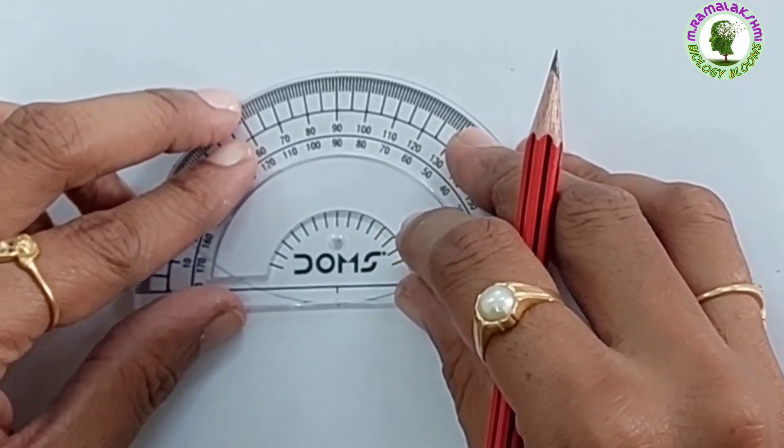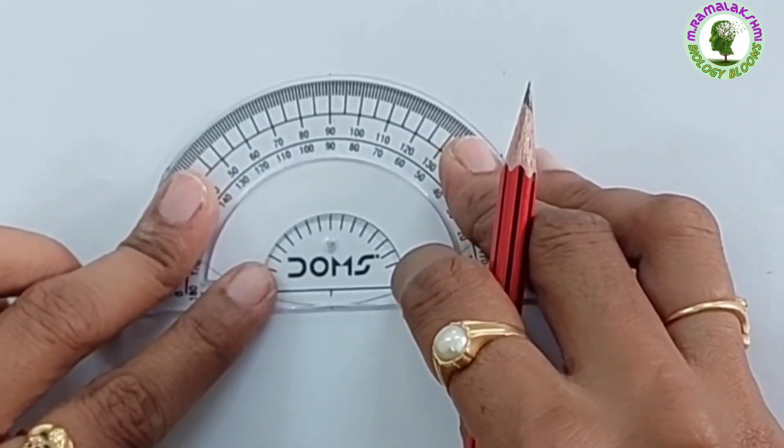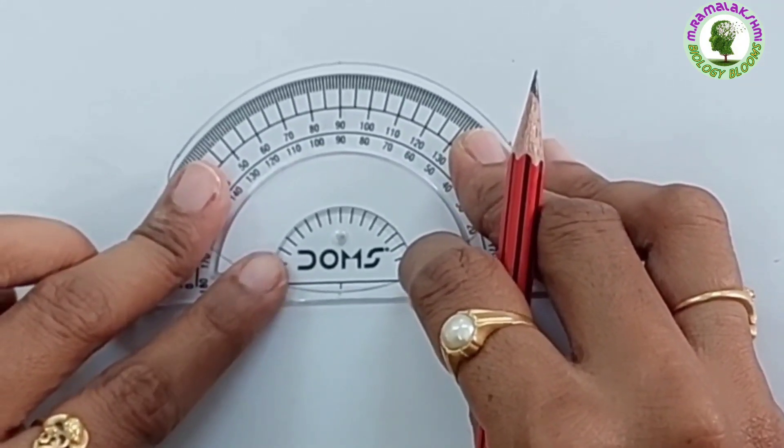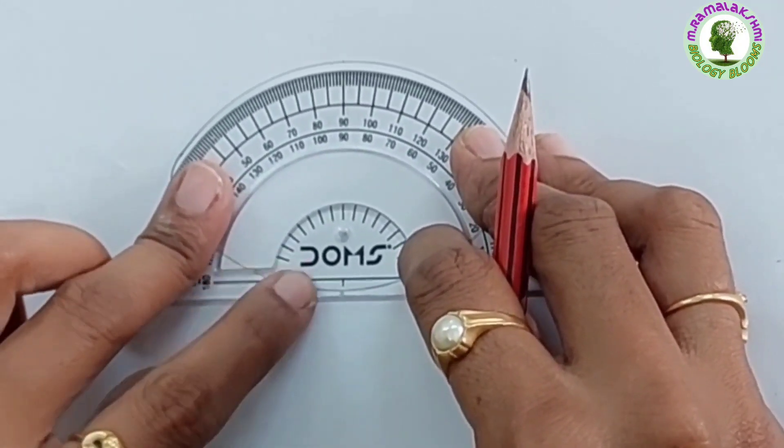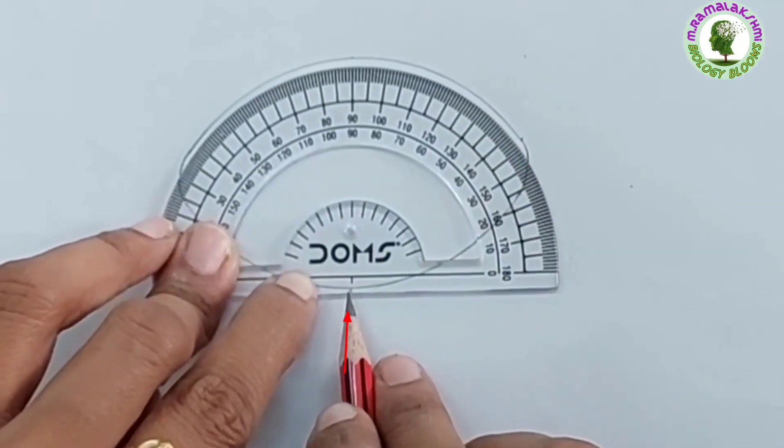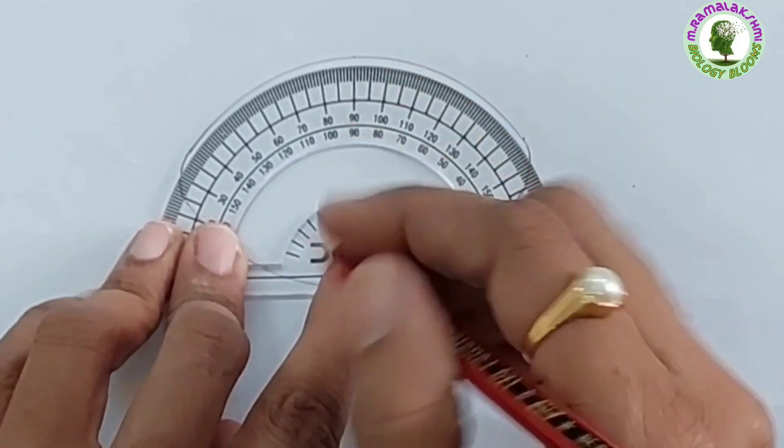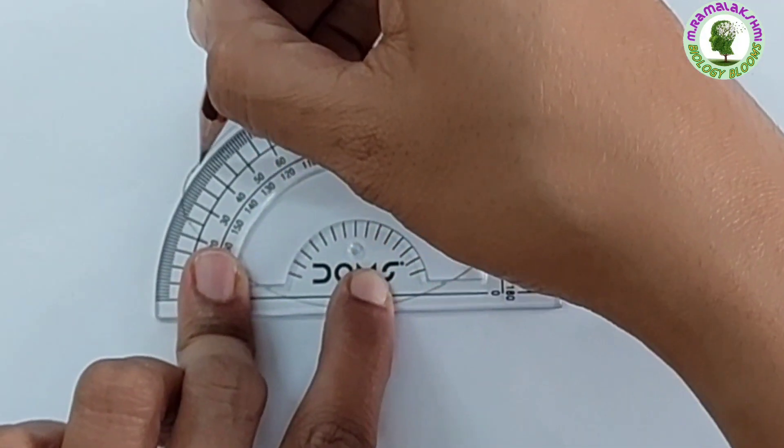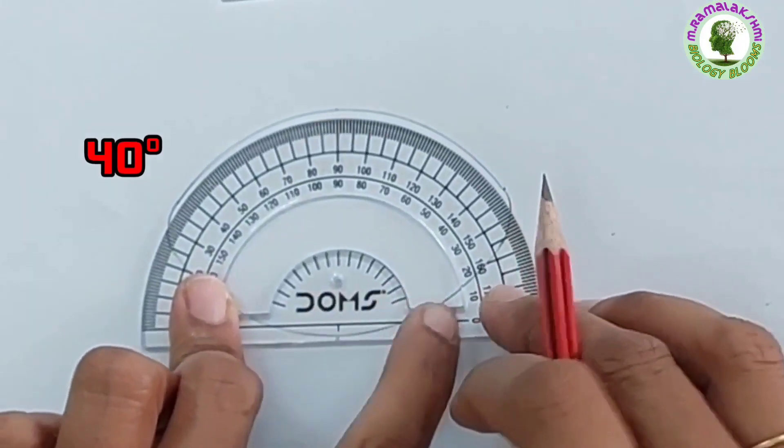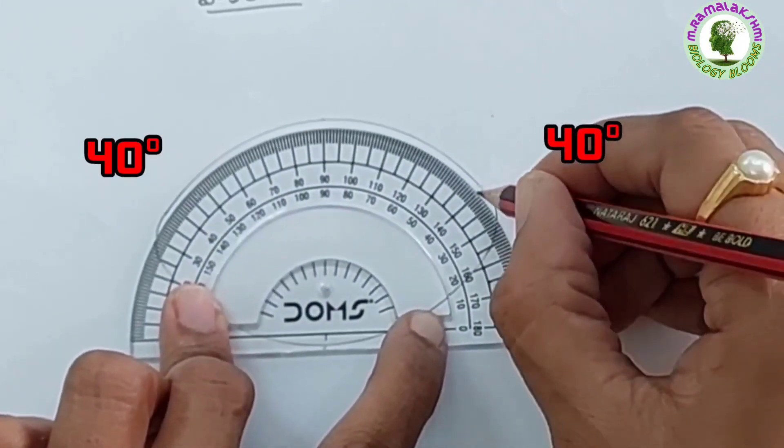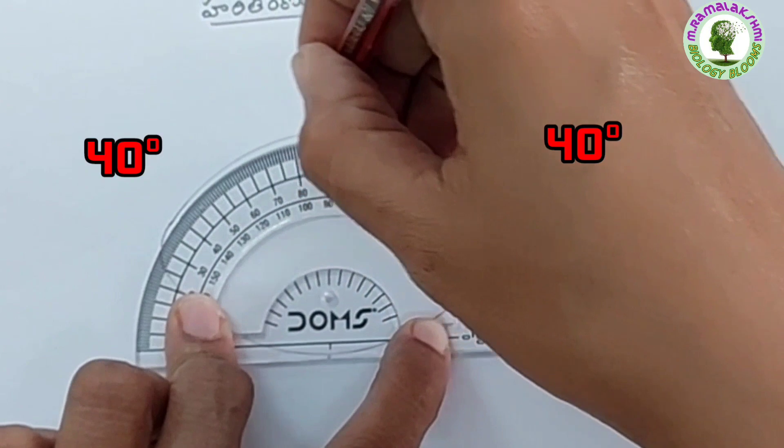Again, take the protractor and keep it like this. Keep the black small vertical line above the 90 degree dot at the lower curve. Keep dots at 40 degrees from this side and 40 degrees from this side.